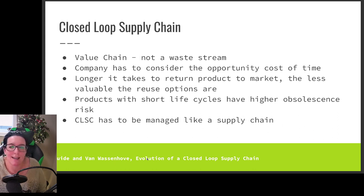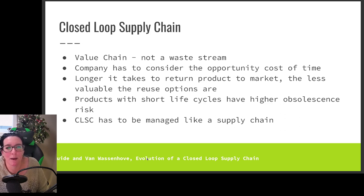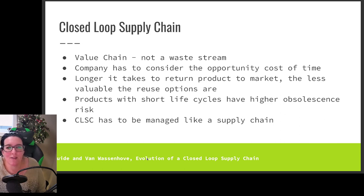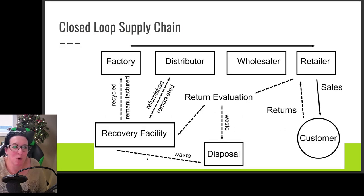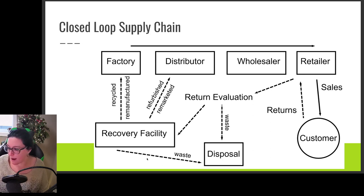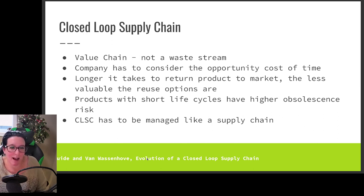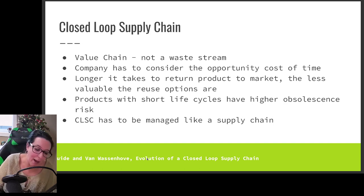We need to consider how long it takes to return the product to the market — the less valuable that return product becomes, the less companies will be interested in closing the supply chain. We also need to consider the life cycle of the products, because the length of the life cycle will determine its obsolescence risk and whether or not it's worthwhile to close that supply chain. The closed loop supply chain has to be managed like a supply chain — reverse logistics have to have value added and create profit for the organization, just like the forward logistics.